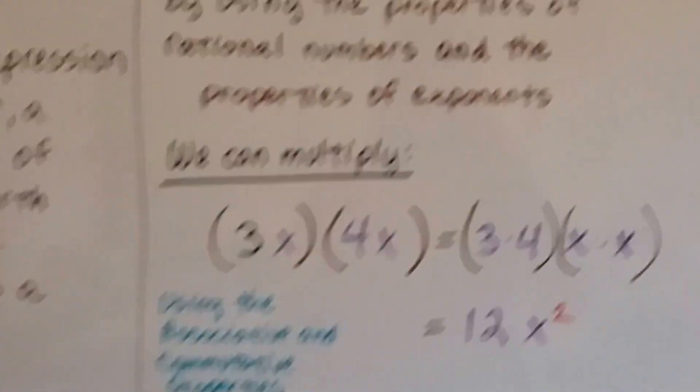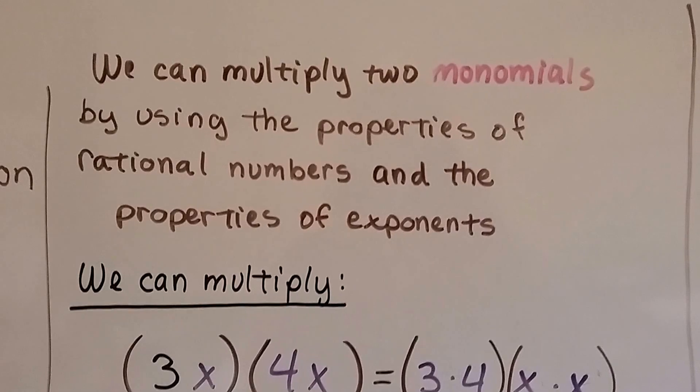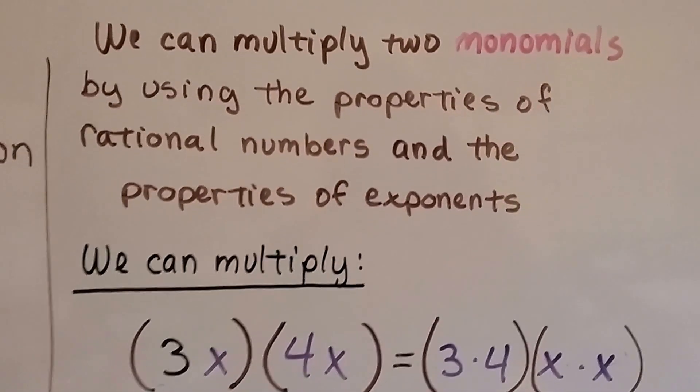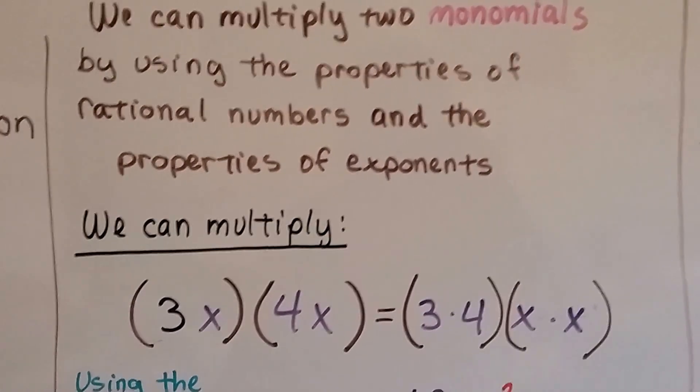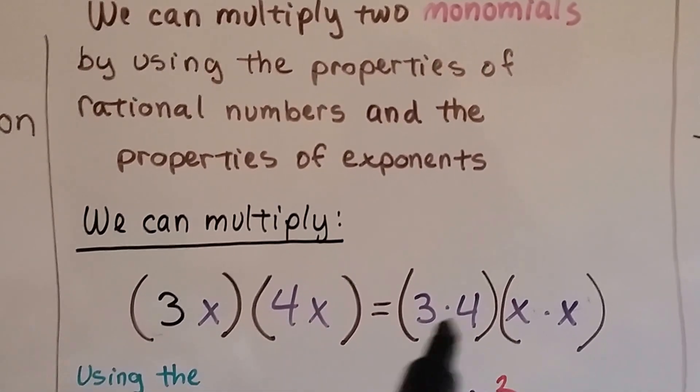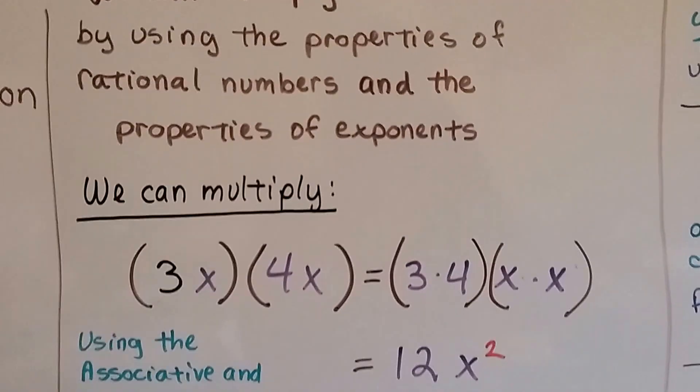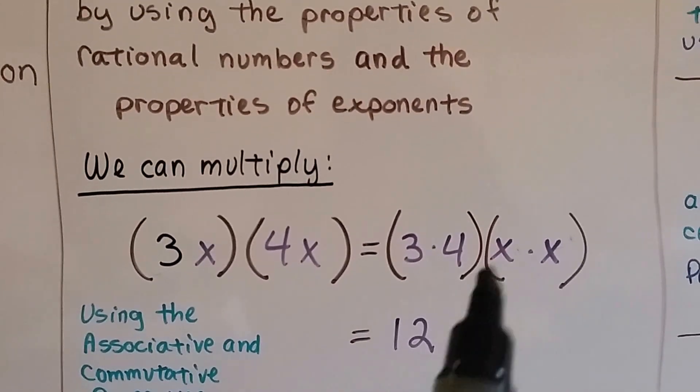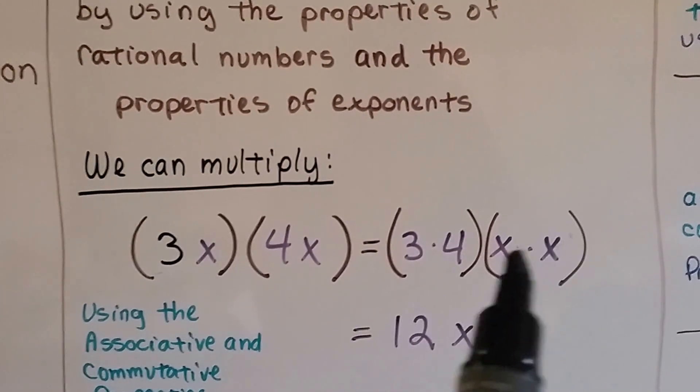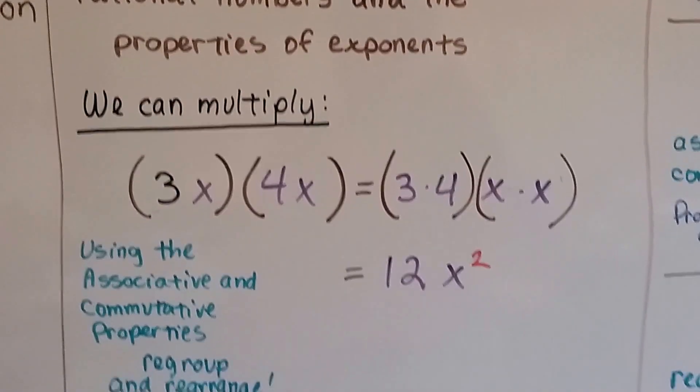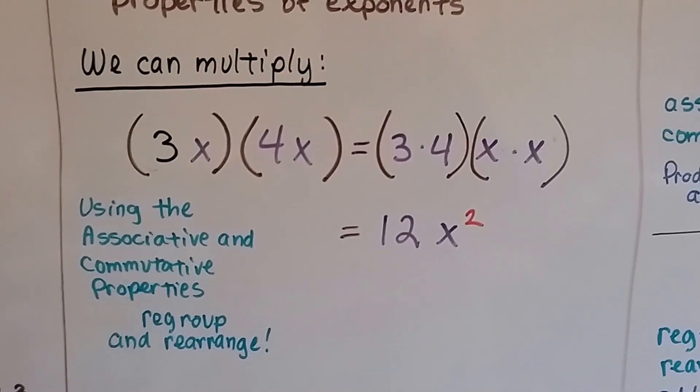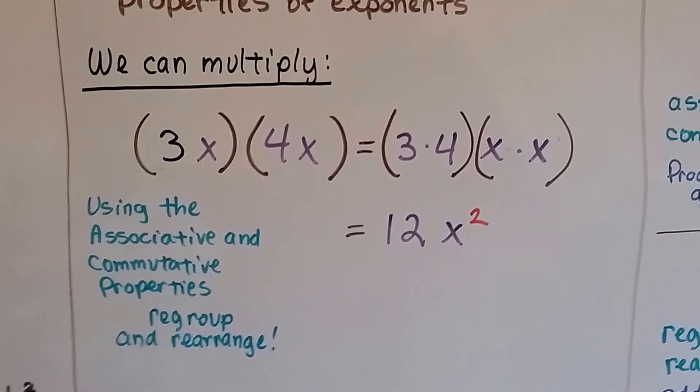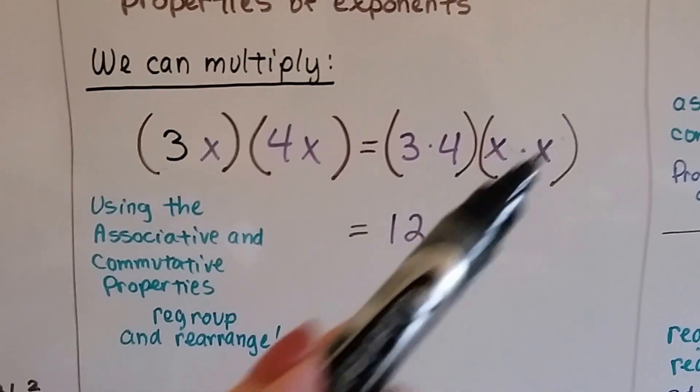We can multiply two monomials by using the properties of rational numbers and the properties of exponents. We can multiply 3x by 4x. We group the 3 and the 4 together, and we group the x's together. And we get 12x squared, because remember, x and x makes x squared. Using the associative and commutative properties, we regroup and rearrange them. And we use the product rule for exponents to add the exponents together.